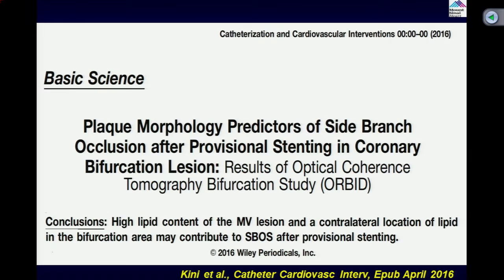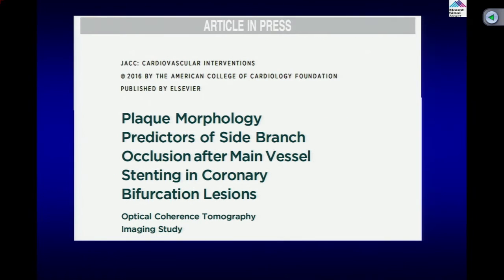The conclusion for this paper is that high lipid content of the main vessel lesion and contralateral location of the lipid in the bifurcation area are significant predictors of side branch stenosis. Since the lipid was present in three quadrants, one of those quadrants is also closer to the side branch — so about 60 percent had three quadrants, meaning the closer side also had lipid.